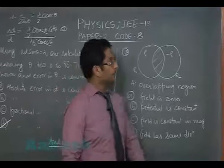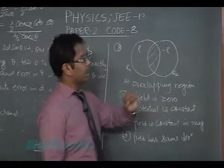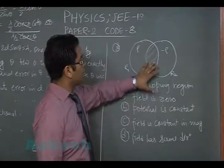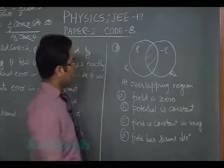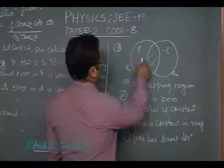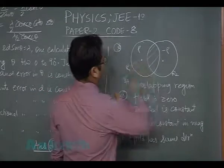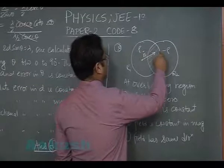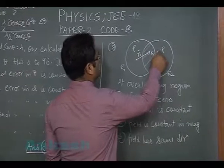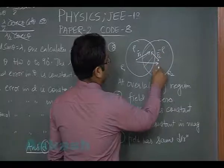Let's move to question number eight. Two non-conducting spheres, one having ρ, the other having -ρ, overlapping, and we need to comment on the field and potential in the overlapping zone. If one is r₁ vector, the other is r₂ vector, and this is a vector...